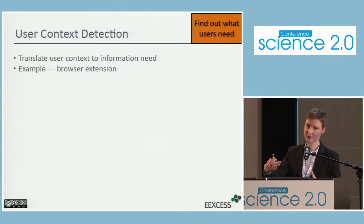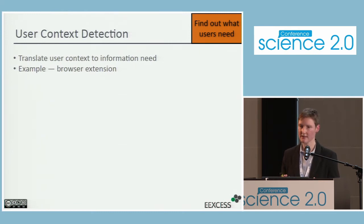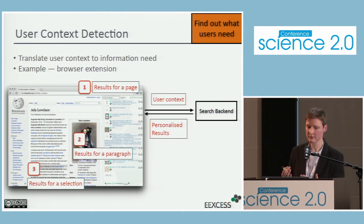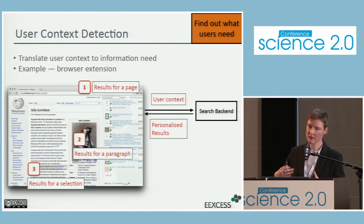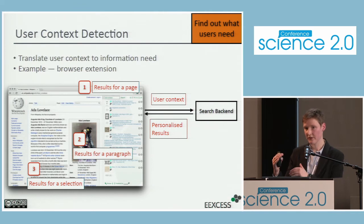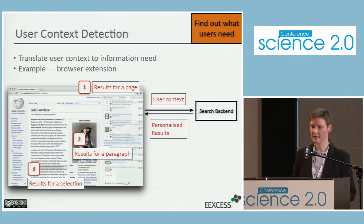Now we know how to get content to the users. What is still missing is which content to get there. To find out what users need, we detect the current context and translate this user context into a representation of an information need. There may be an information need on different levels of granularity: you might need resources for a whole page, which is topically broad; for a certain paragraph only; or even for a part of a paragraph — a selection. When we have the context, it is sent to a search backend, and personalized results are returned and displayed.